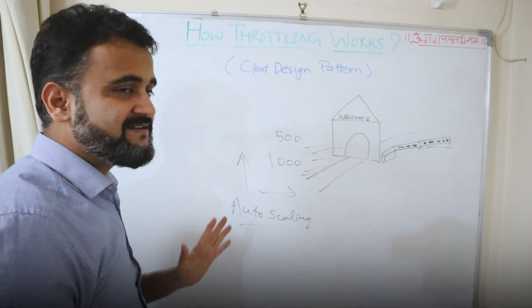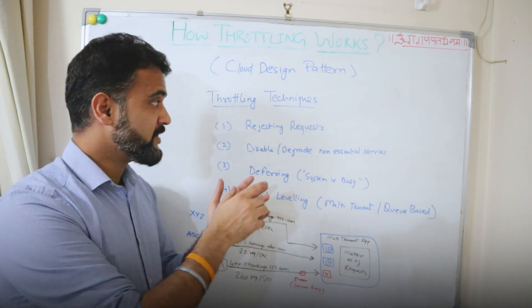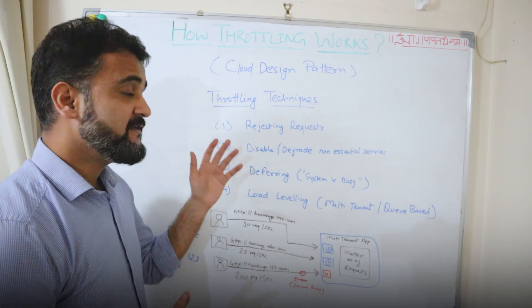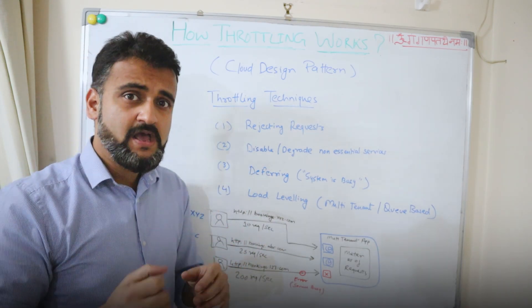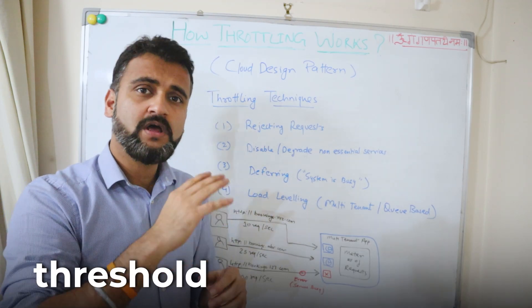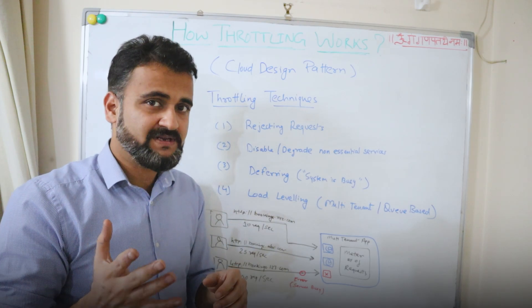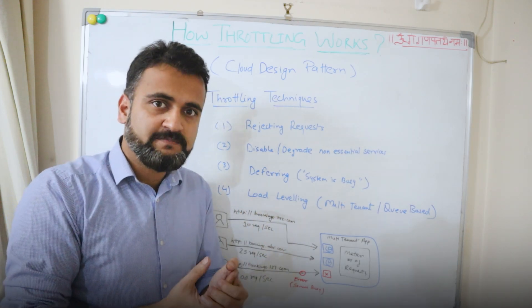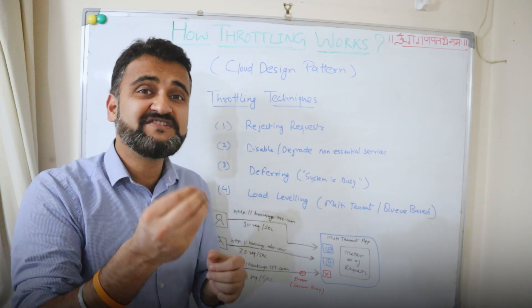Now let's understand how throttling works, keeping that marriage example in picture. The very first technique is rejecting requests. As soon as the system gets busier and crosses a certain threshold, the system would start rejecting requests — it has to retain its performance and resources so that it could at least remain available.